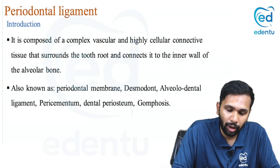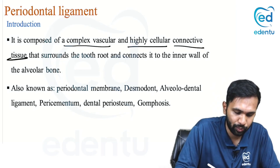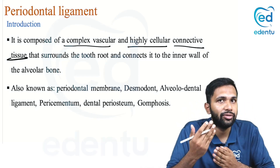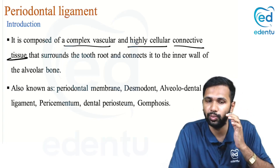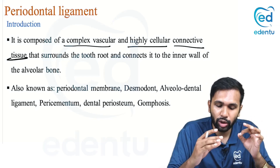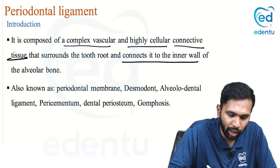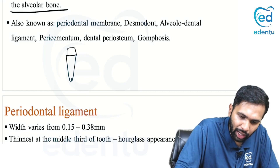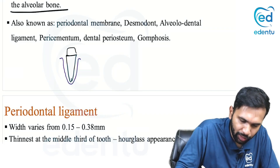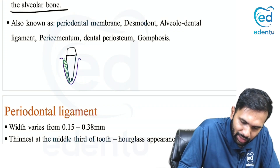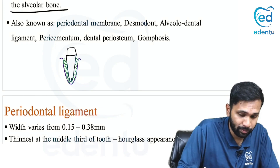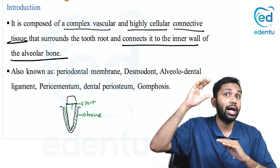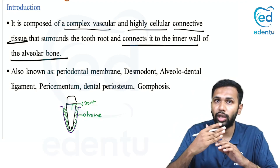The periodontal ligament is composed of a complex vascular and highly cellular connective tissue — complex vascular meaning it has its own blood supply, and highly cellular meaning it is rich in cells. It is a connective tissue that surrounds the tooth root and connects it to the inner wall of the alveolar bone. In other words, periodontal ligament is the tissue which connects the root or the cementum to the bone.